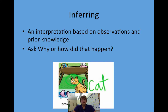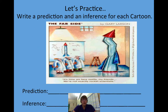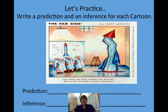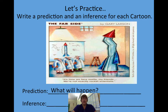Now we're going to try some practice on your own. Write a prediction and an inference for each cartoon. Remember to ask yourself why something happened or how it happened, and what's going to happen next. Your answers may not be the same as mine and that's okay — please write down your own answers first and then you can see what I wrote. Let's start: prediction — what will happen next?